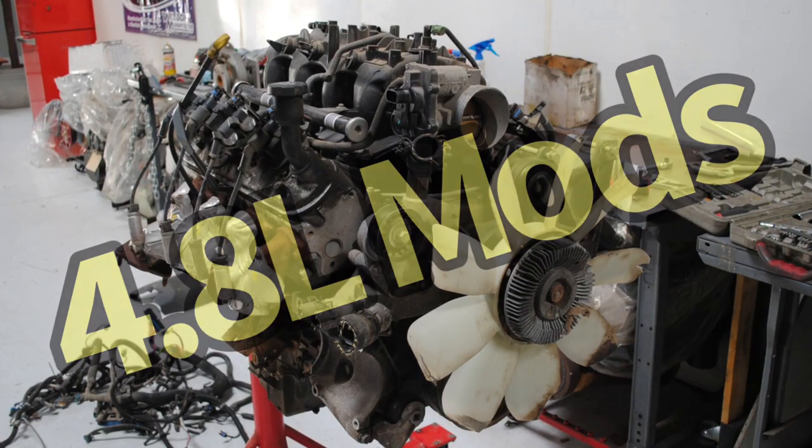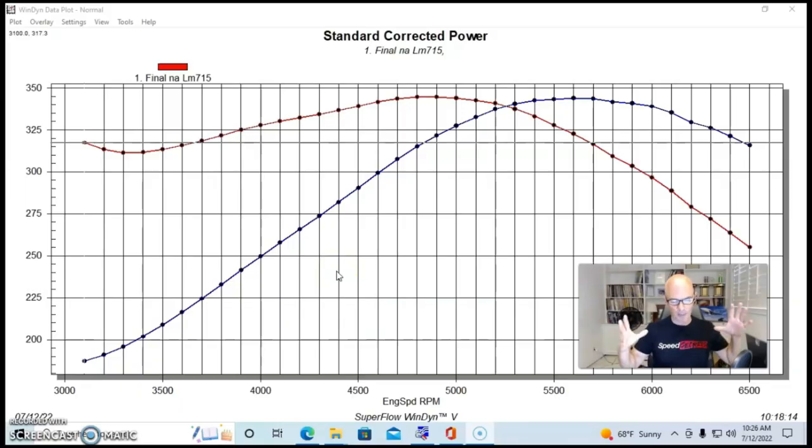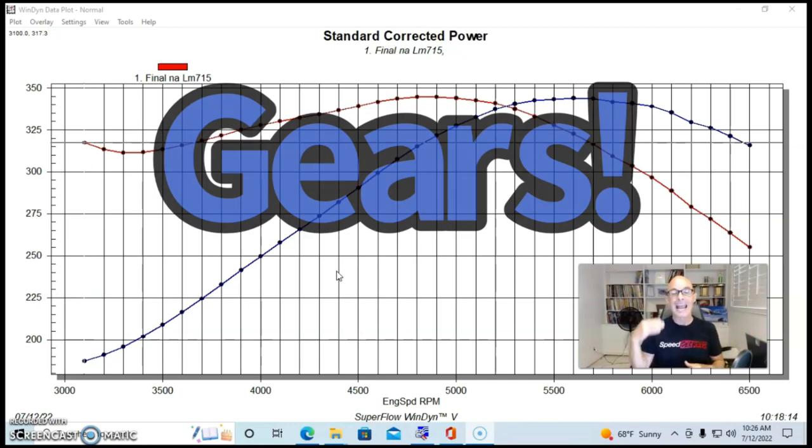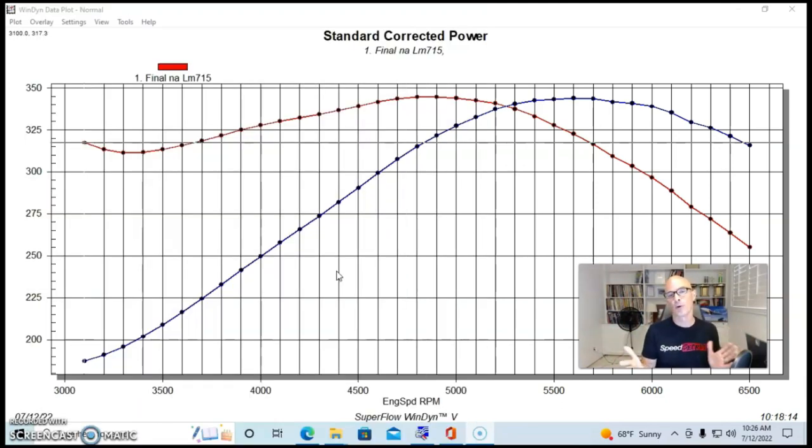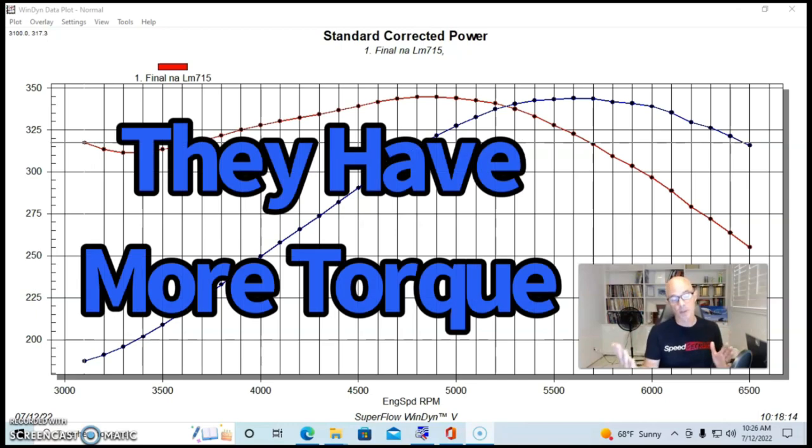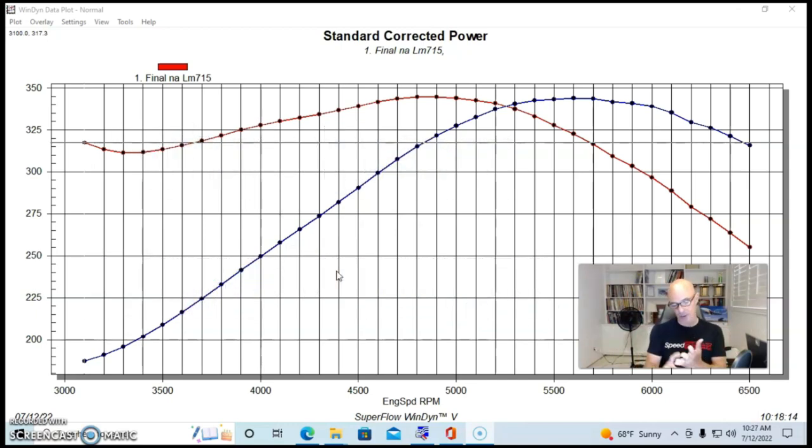As we covered in the introduction, the 4.8 liter being the smallest version of the factory LS engine family, one of the things that people should consider greatly when they have this motor, especially when doing performance upgrades, is gears and or a converter, a higher stall speed converter. And this is more important on the 4.8 liter than the other ones: the 5.3 liter, the 6.0, 6.2, obviously a 7 liter, and any kind of stroke or variant of all of those things.